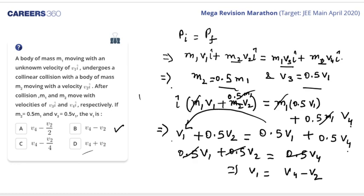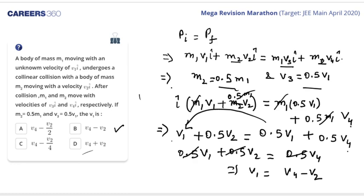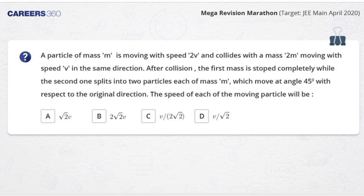Question 3: A particle of mass m is moving with speed 2v and collides with a mass 2m moving with speed v in the same direction. After the collision, the first mass m is stopped completely, while the second mass 2m splits into two particles each of mass m, which move at an angle of 45 degrees with respect to the original direction. Find the speed of each of the moving particles.